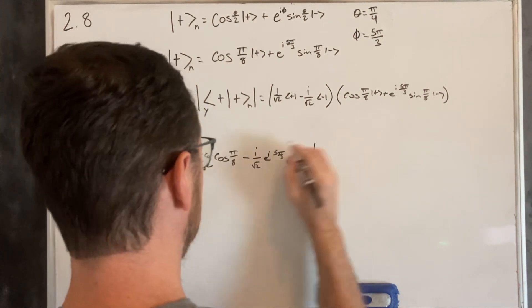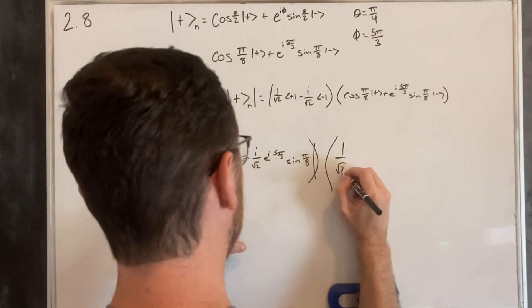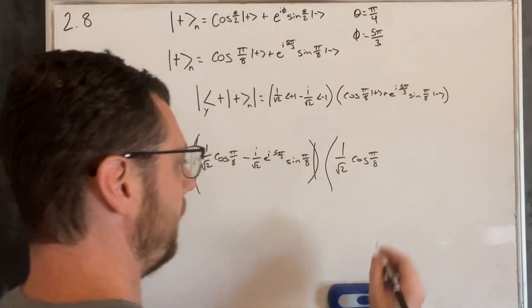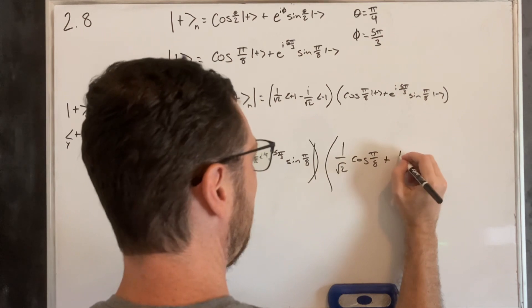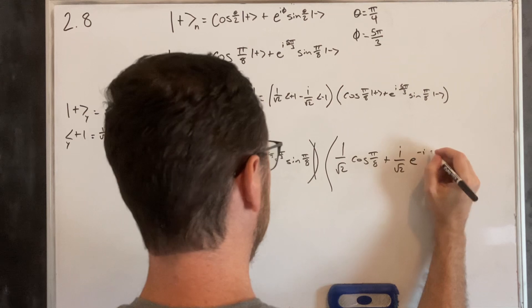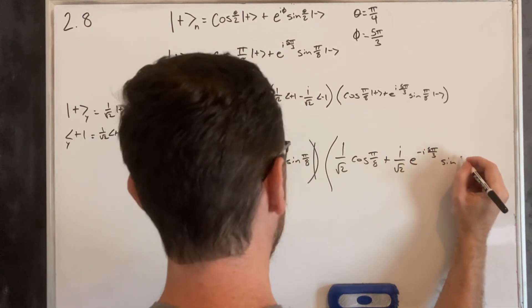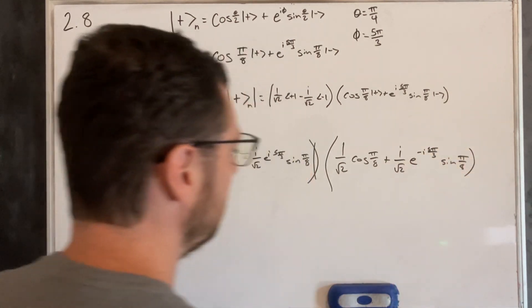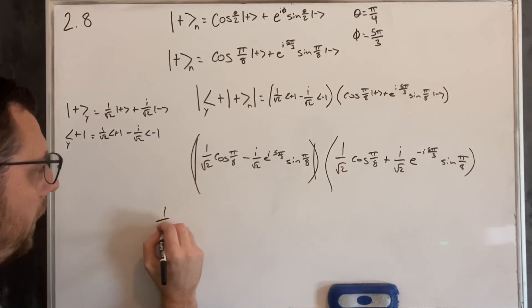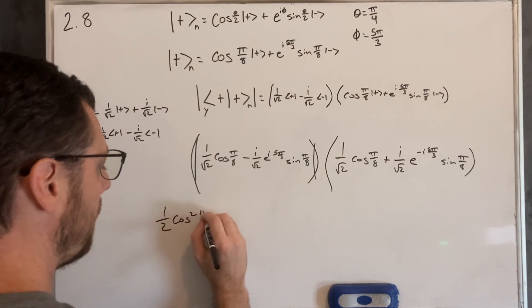We get our up-up and down-down inner products, so we're going to have 1 over root 2 cosine π/8, and then minus i over root 2 · e to the i·(5π/3) · sine π/8. And that's going to be squared — so we multiply by 1 over root 2 cosine π/8 plus i over root 2 · e to the negative i·(5π/3) · sine π/8.